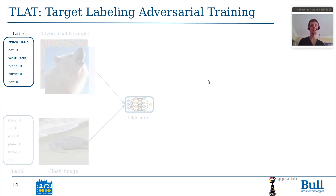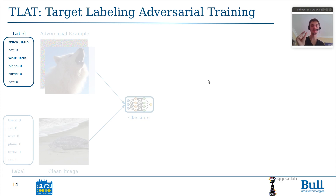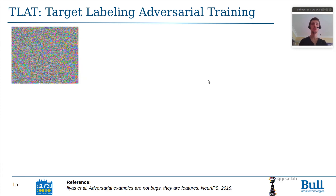The idea of Targeted Labeling Adversarial Training is just to change the labeling strategy of adversarial training. So, instead of labeling the adversarial examples only with a ground truth label — here only with a one-hot encoded label with wolf — it is labeled with wolf but also with a small part related to the target of the adversarial example, here, truck.